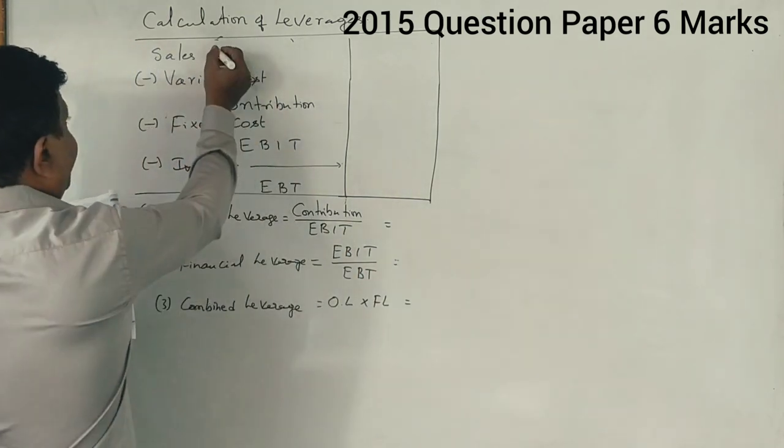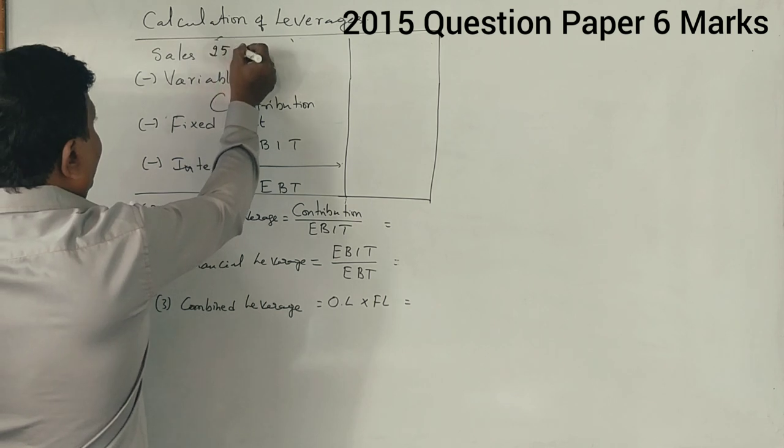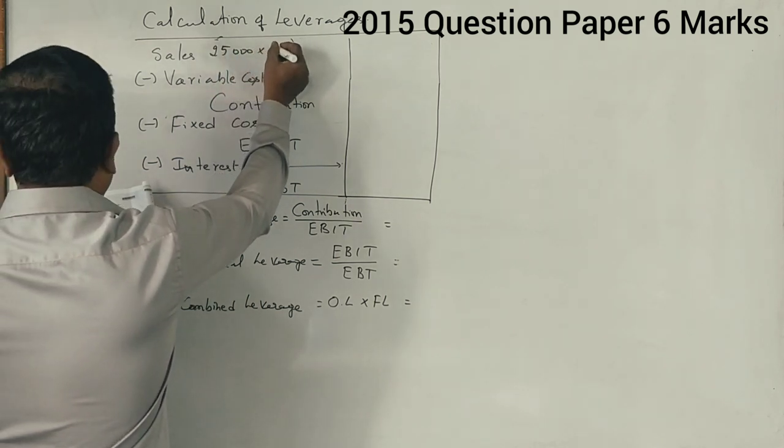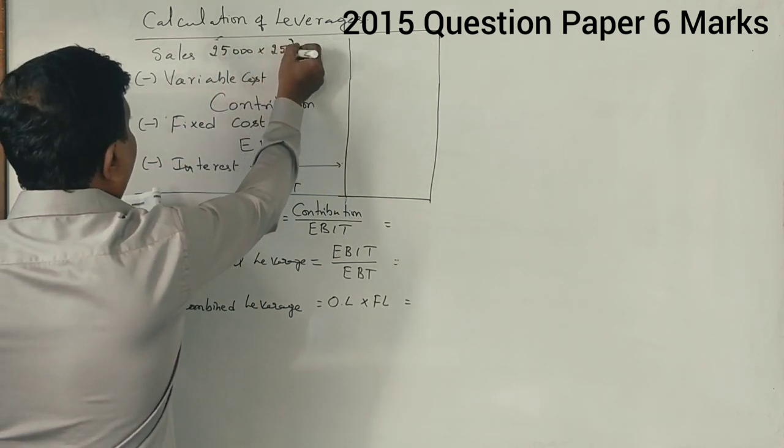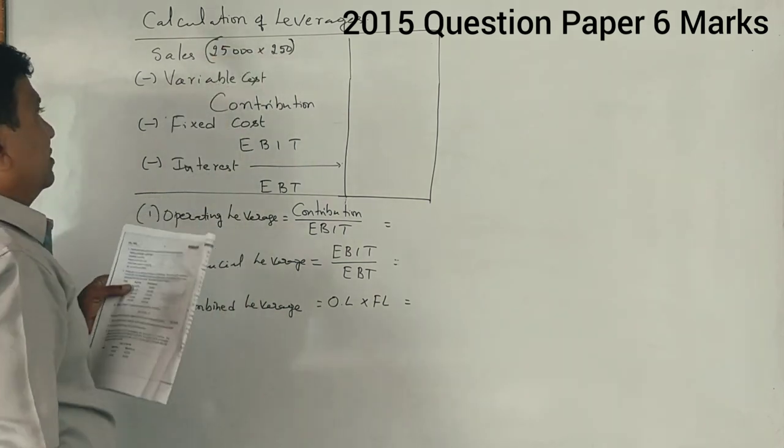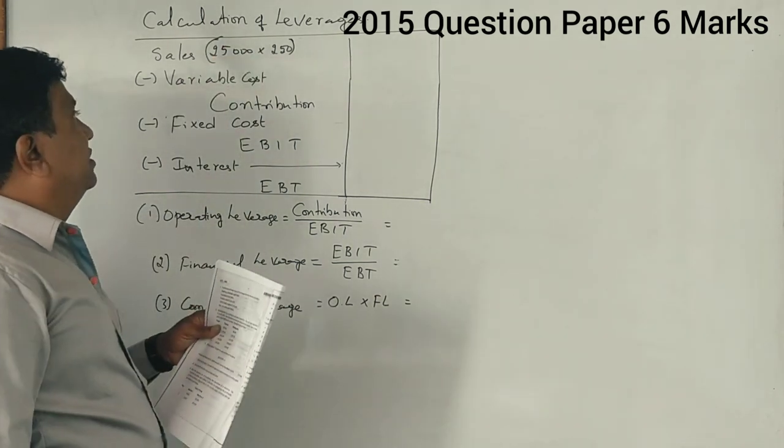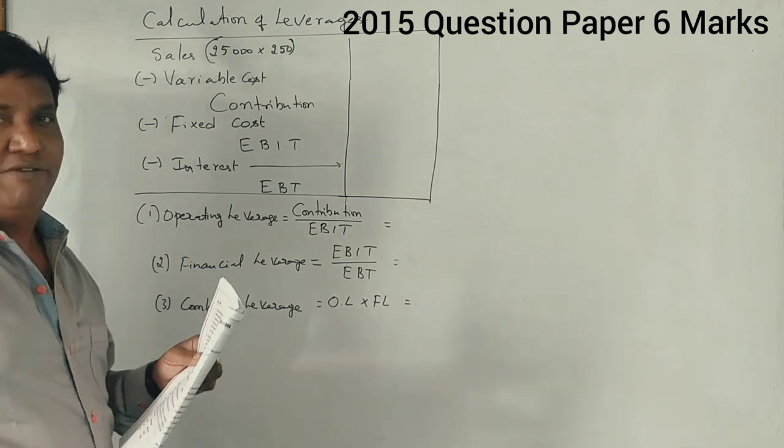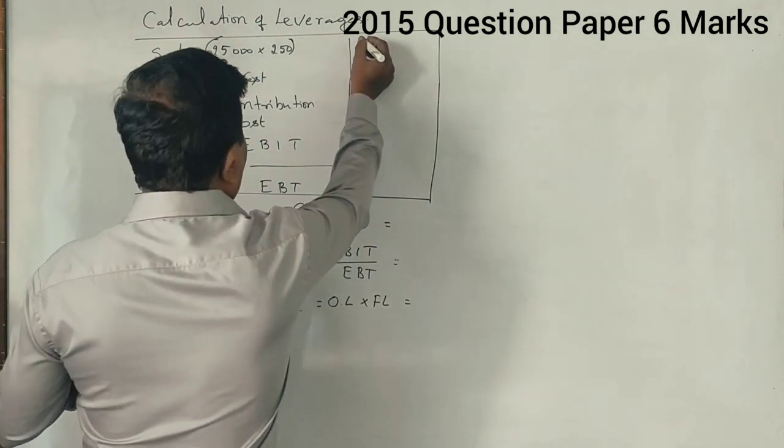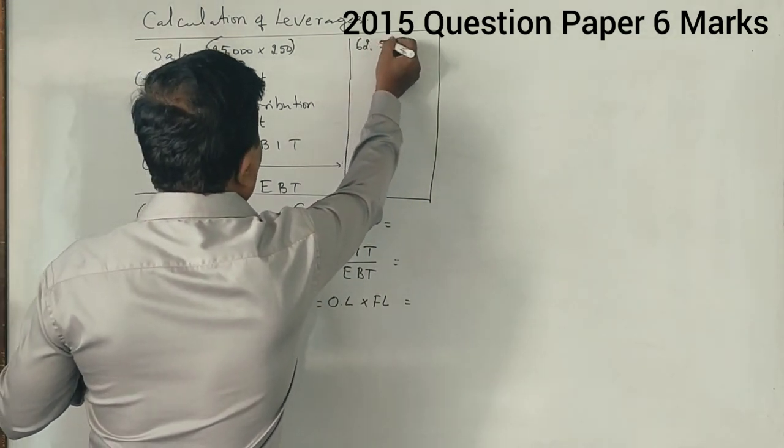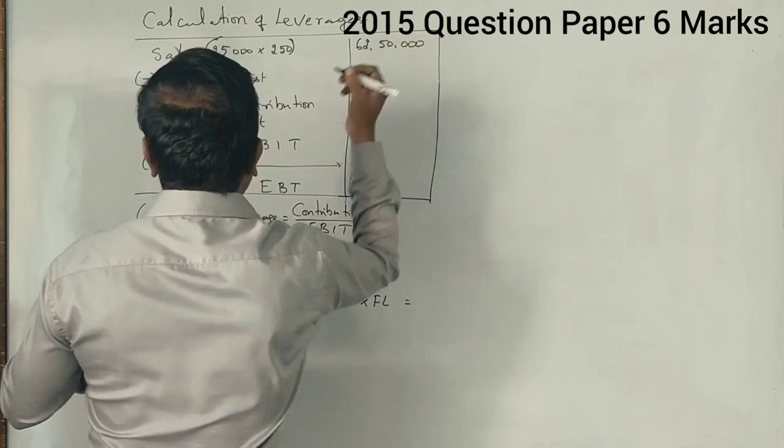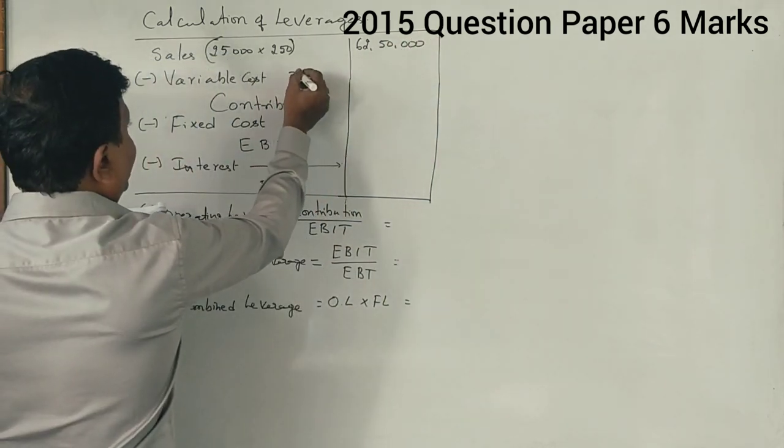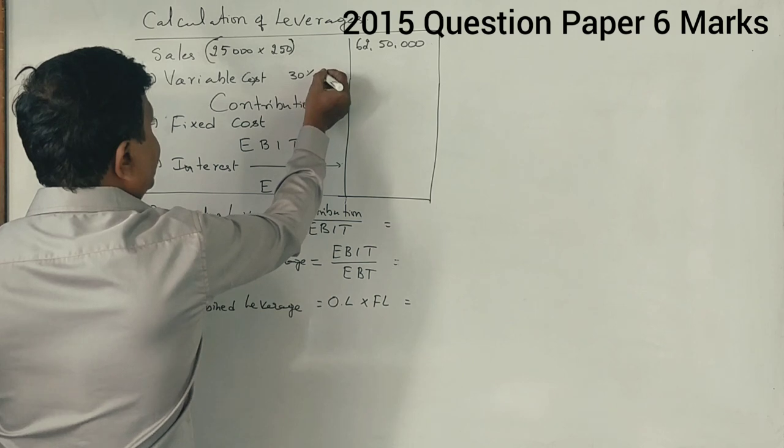Number of units sold is 25,000 into 250 rupees. Tell me how much is it? 62 lakhs, correct? And variable cost is 30% on sales.